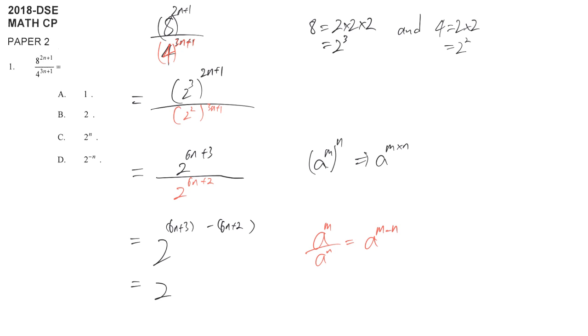Handle the brackets carefully. When you remove them, both terms become negative, so it becomes 6n+3-6n-2. The 6n terms cancel out, leaving 2^(3-2) = 2^1 = 2.